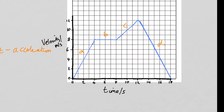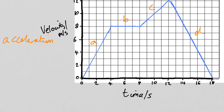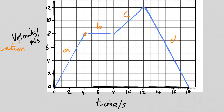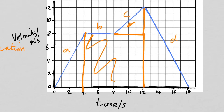So let's work out the distance. The easiest way is to separate the graph into sections. We've got a triangle here in section A, then a square in section B, another triangle for section C, and a final triangle for section D. Working out the area of each shape and adding them together will give us the total distance travelled by this object. If you think you can do it, pause the video and work it out.